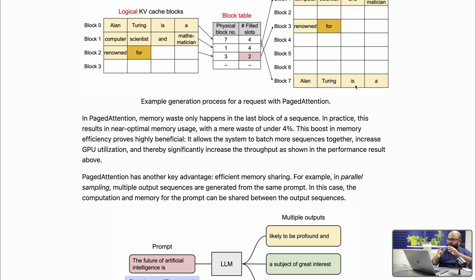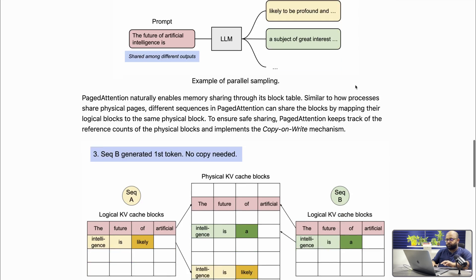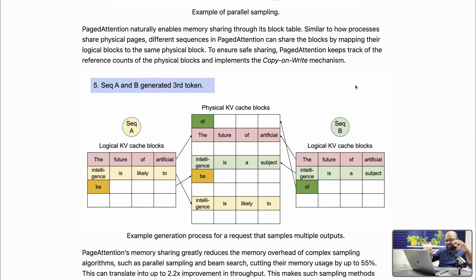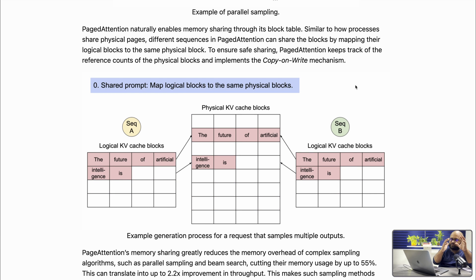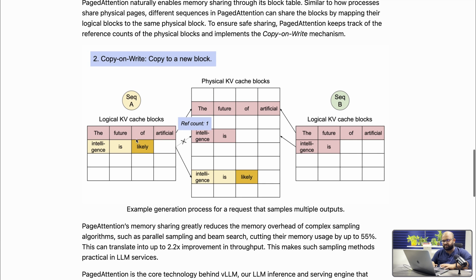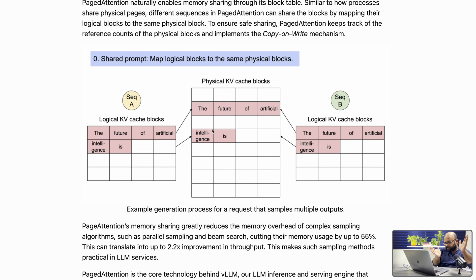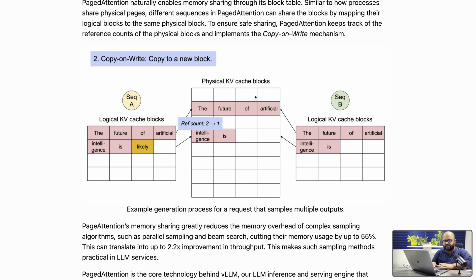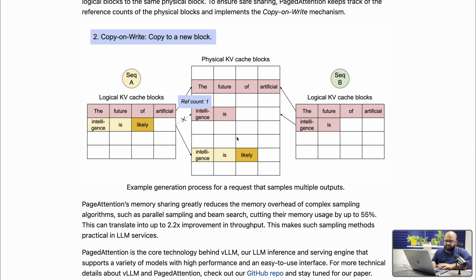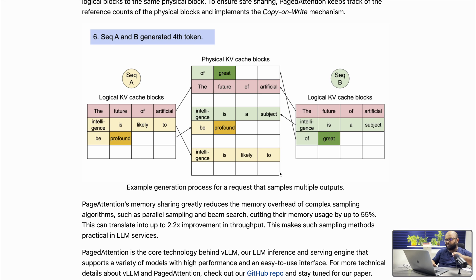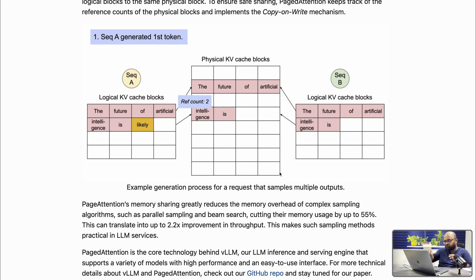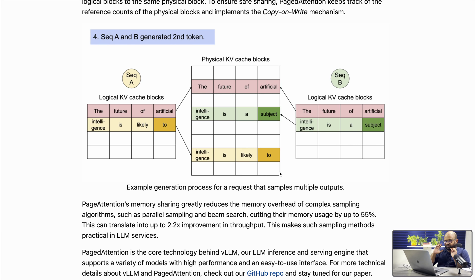Another advantage of this approach: if you want to do sampling — generating multiple answers for the same prompt — you don't need duplicate key-value pairs. For part of a sequence, you may share the same attention key-value. For example, 'the future of artificial intelligence' as a prompt: the LLM can take two different paths, but whenever there is a common path, they share the same physical KV cache block. By doing this, they were able to utilize memory by 90 to 95%, since only the last block may be partially empty — at most three slots wasted — which minimizes waste on expensive GPU memory.